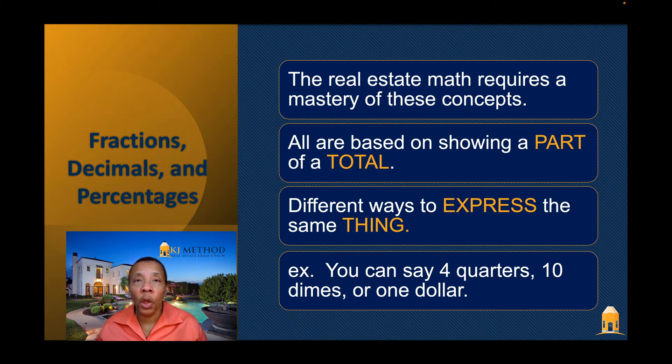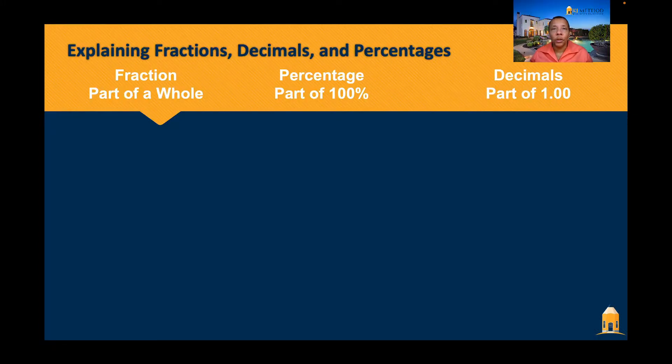Now when we're talking about any of these three things fractions decimals or percentage we're just talking about a part of a whole. So we're expressing it as a part of the whole thing. A fraction is simply a part of a whole. A percentage is a part of a whole but it's based upon 100% and a decimal is simply a part of a whole also but it's based upon one.